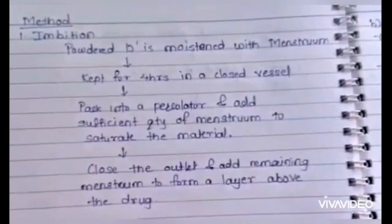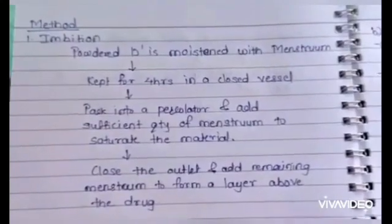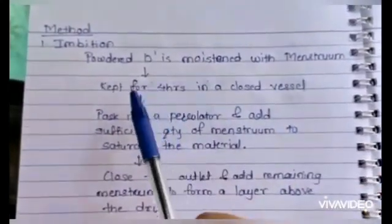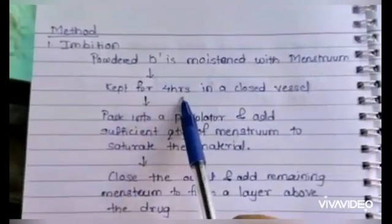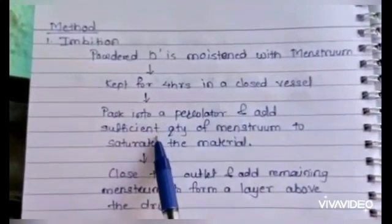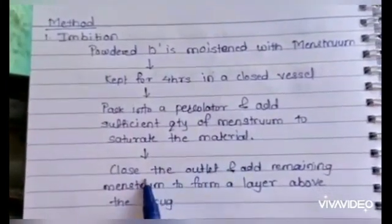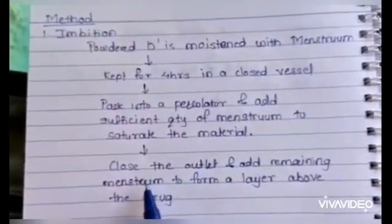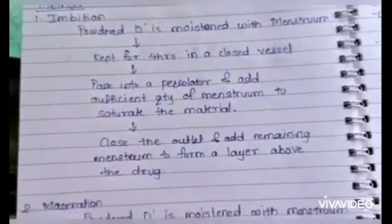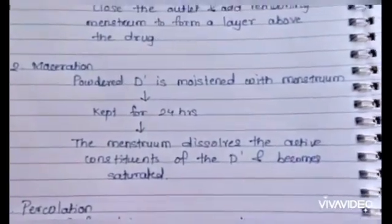There are three stages involved in simple percolation. The first stage is imbibition. In this stage, the drug is first powdered to make uniform particles. The powdered drug is then moistened by adding a suitable amount of menstruum, and after adding menstruum it is kept aside for four hours in a closed vessel. The percolator is packed and a sufficient quantity of menstruum is added to saturate the material. After that, the outlet of the percolator is closed and the remaining amount of menstruum is added so it forms an upper layer on the drug.